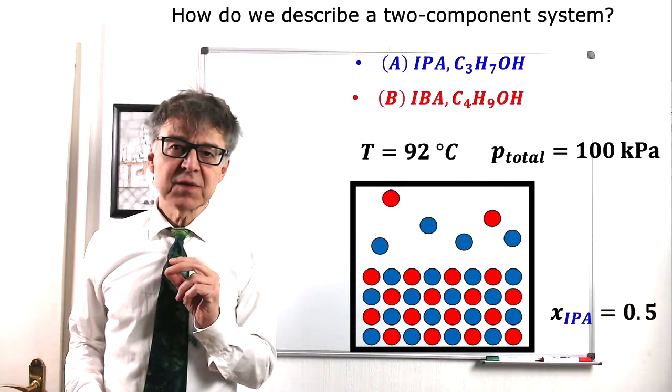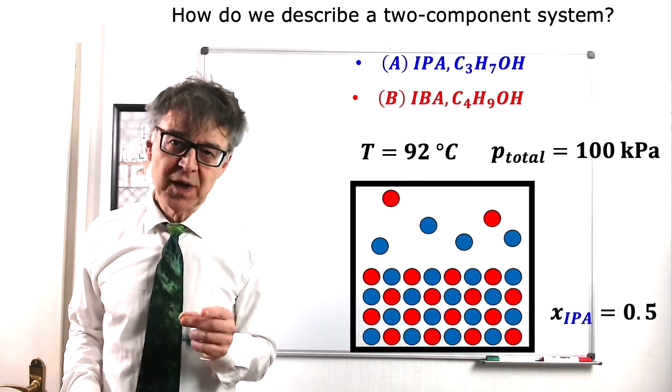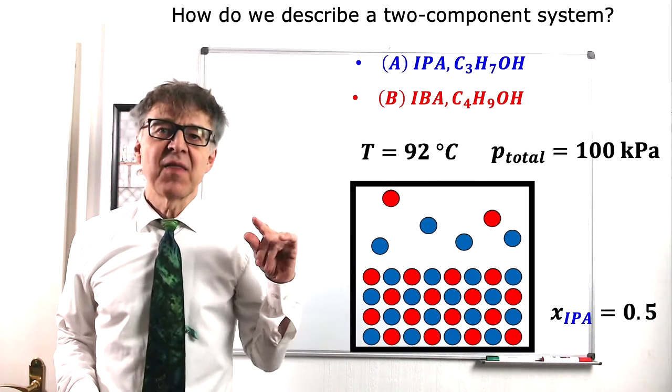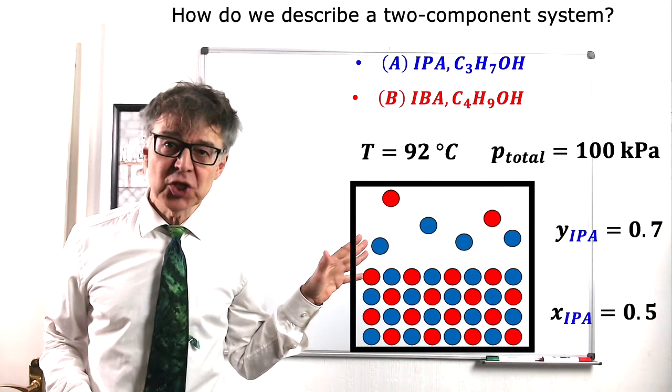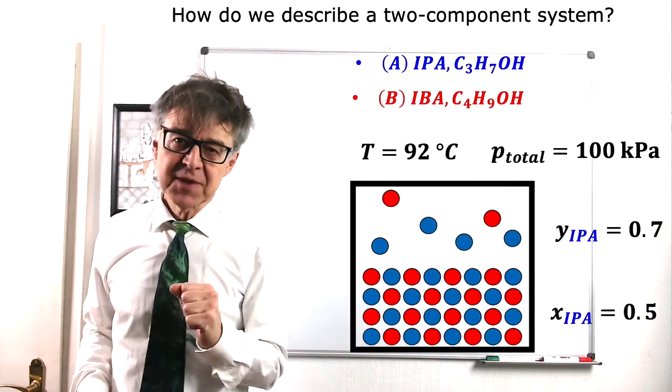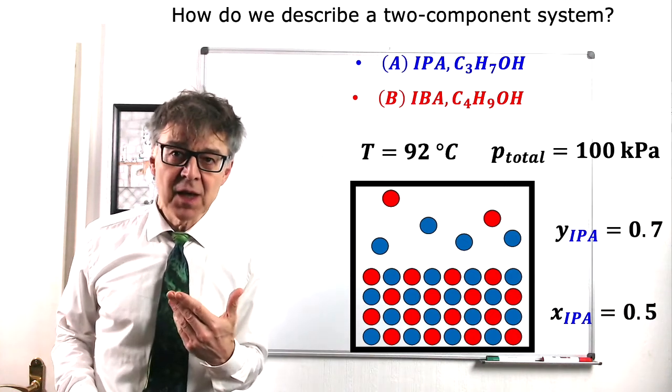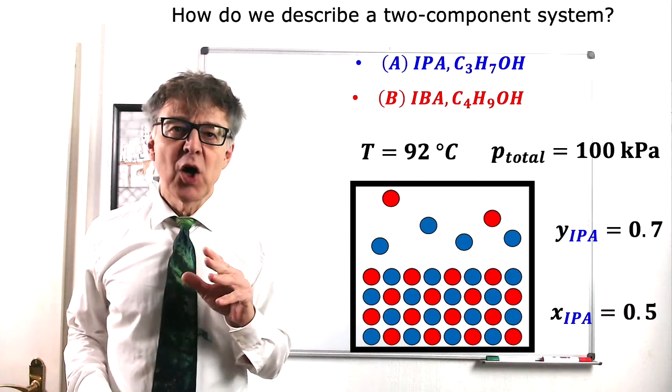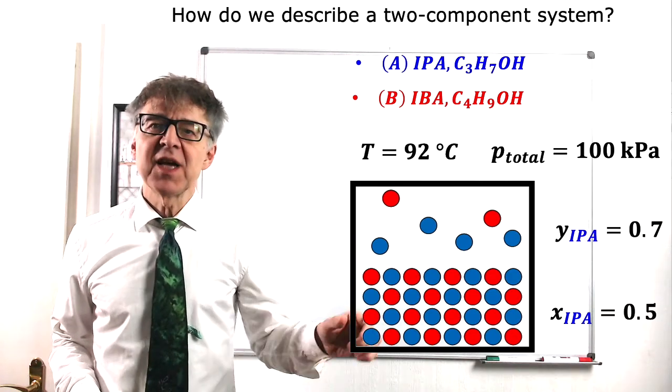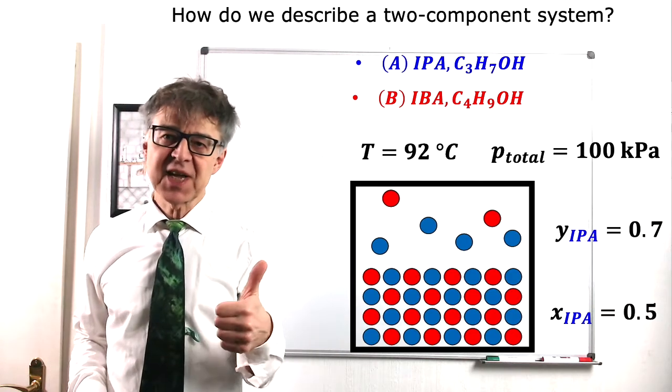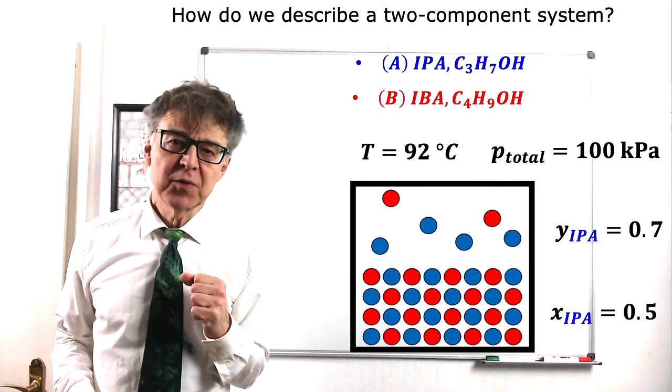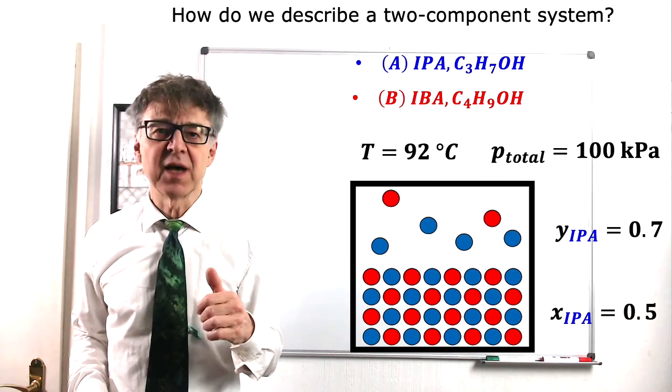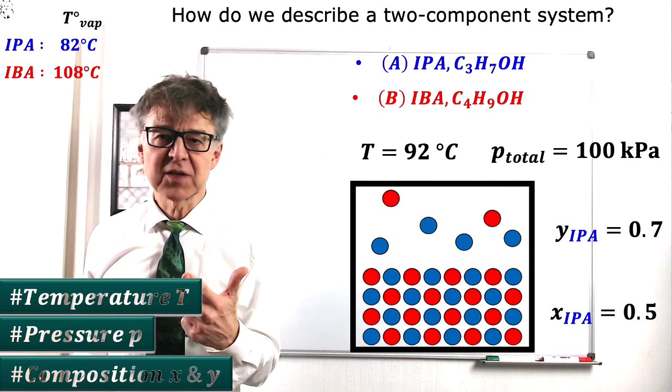This will lead to a total pressure of 100 kPa. If we analyze the gas phase above the liquid mixture, we see that it is 70% in IPA, while the liquid phase is only 50% IPA. What we just described is one possible state of the two-component system IBA-IPA, characterized by temperature, pressure, and composition.